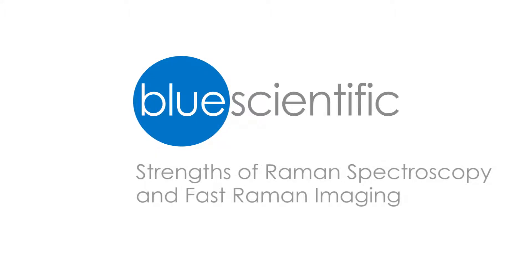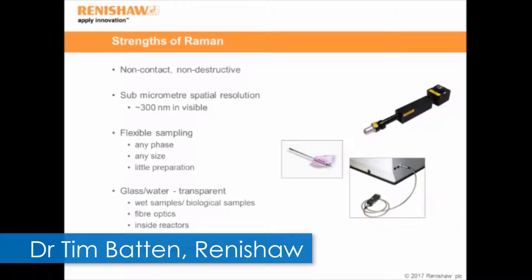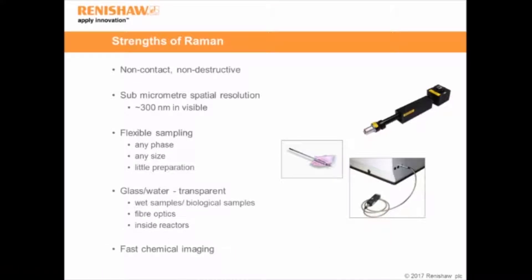What are the strengths of Raman spectroscopy? It's a non-contact technique and it's non-destructive. We're able to get submicrometre spatial resolution, on the order of 300 nanometres in the visible. We're able to do flexible sampling — we can measure samples in any phase: solid, liquids, or gases. We can measure samples of any size, both micro and macro, and we need to do very little sample preparation.